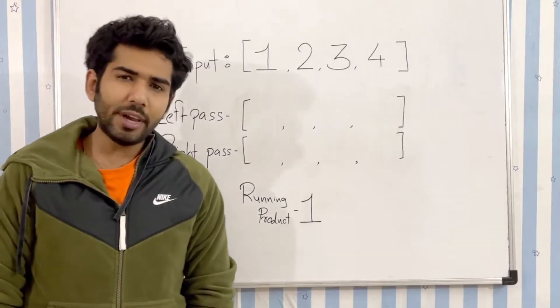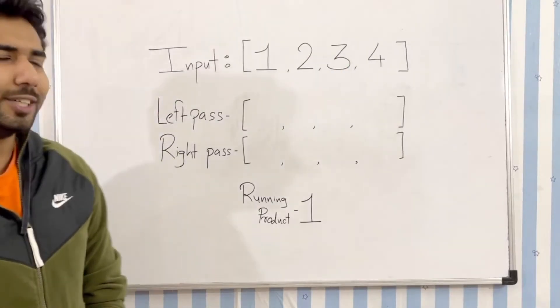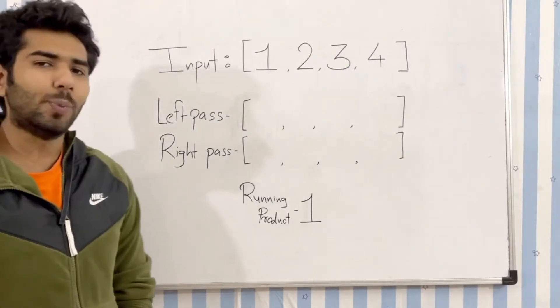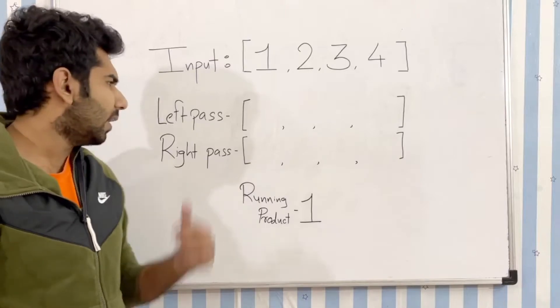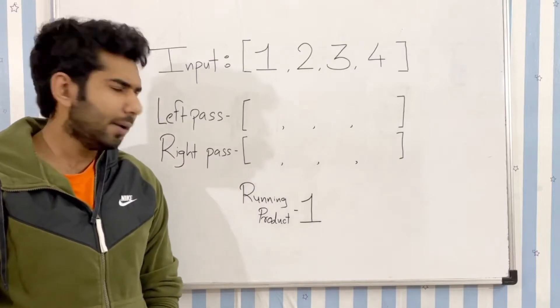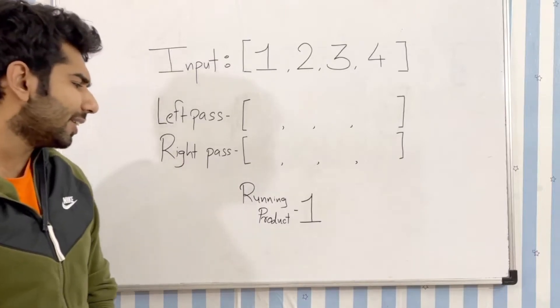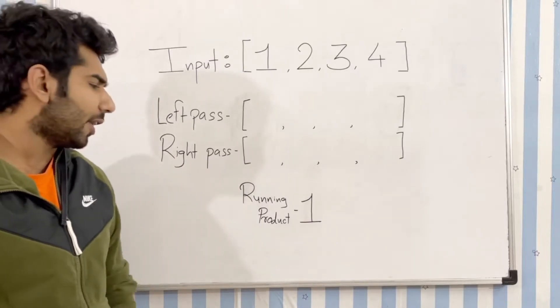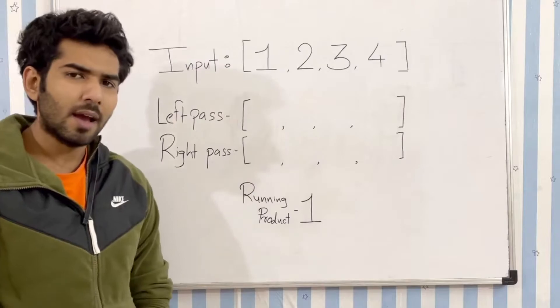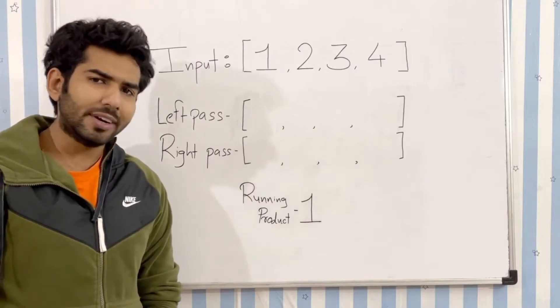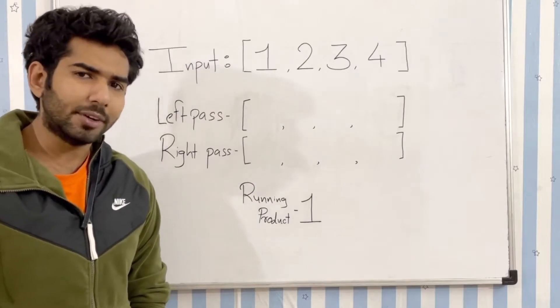We are going to approach this question in two passes — a left pass and a right pass — and we will also be maintaining a variable called running product. Don't worry, you will understand the approach in a minute.